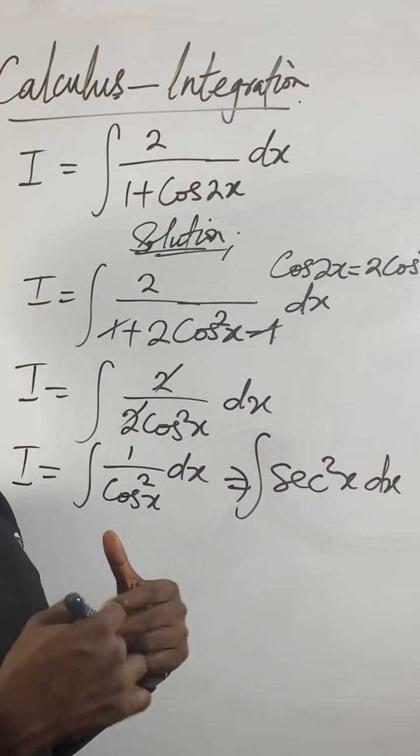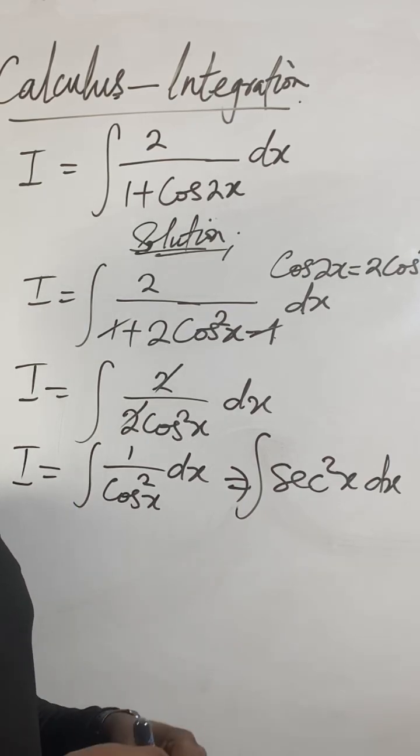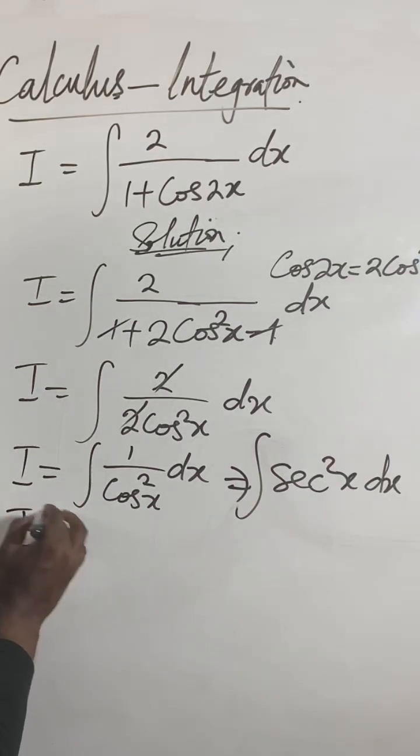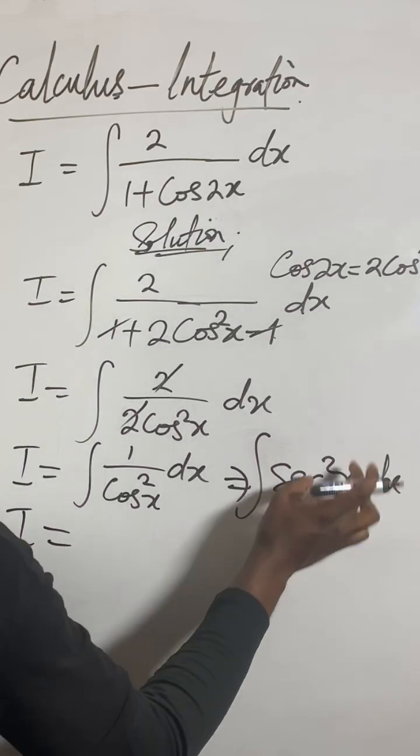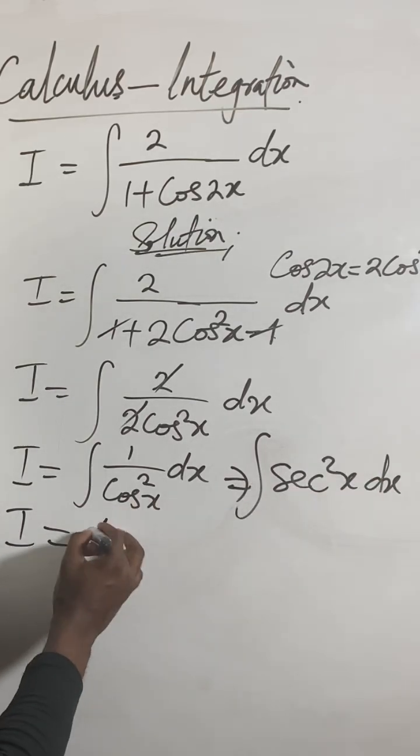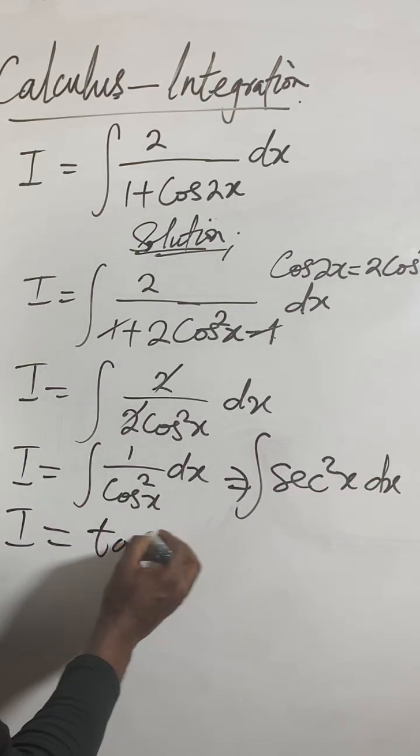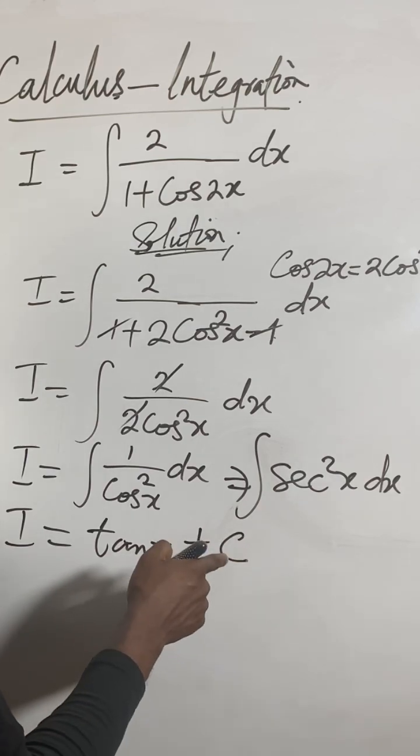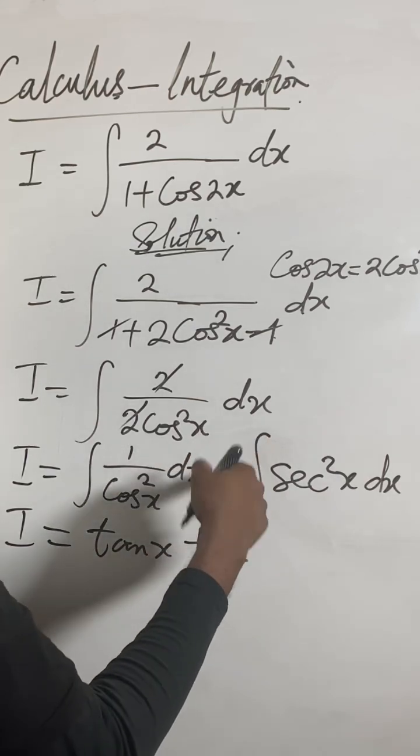So now, integral of sec²x will give us tanx plus C, the constant of integration. That will be the final answer.